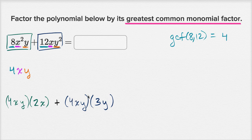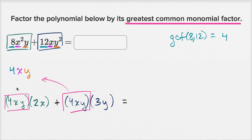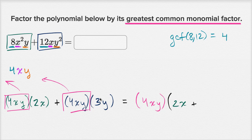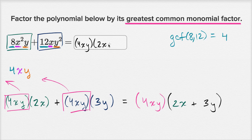Now I can factor the 4xy out — undistribute it. This is going to be equal to 4xy times (2x + 3y), and we are done. You can verify: distributing 4xy times 2x gives 8x²y, and 4xy times 3y gives 12xy². So the answer is 4xy — the greatest common monomial factor — times (2x + 3y).